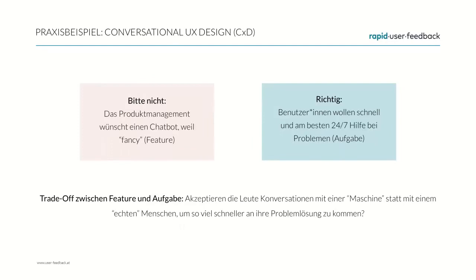The key takeaway is: don't concentrate on the features of a product, but focus on the tasks the product should actually perform. Ask whether users know what those tasks are. Most of the time, as illustrated by the remote control, fancy features are rather useless — or at least, users simply don't use them.